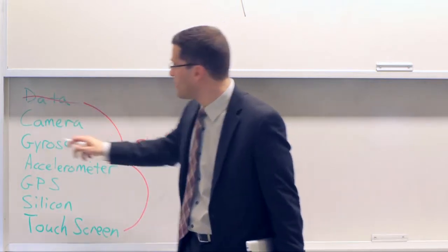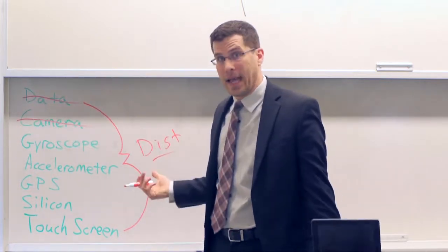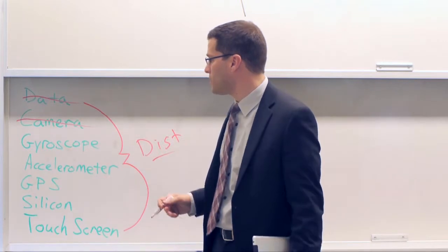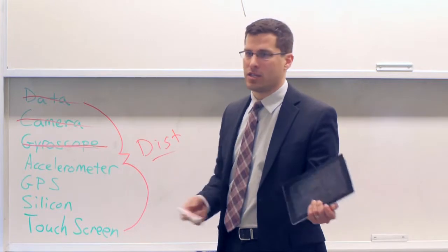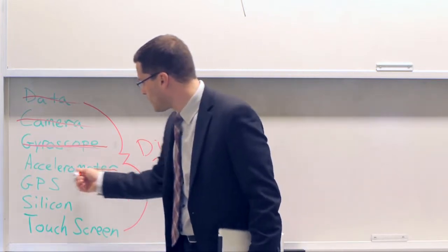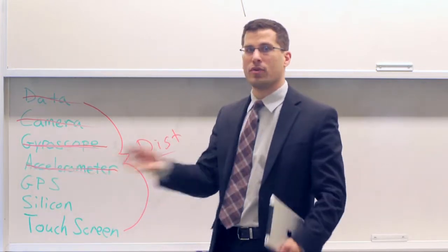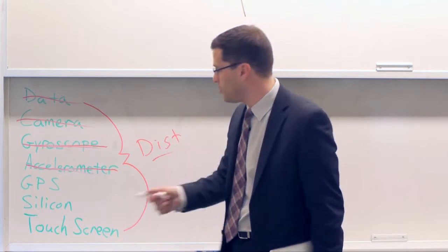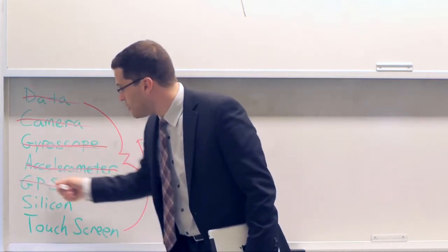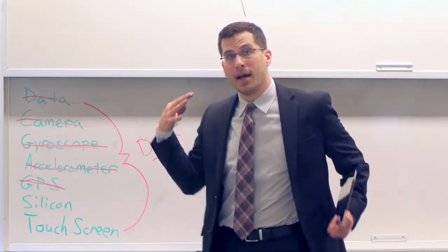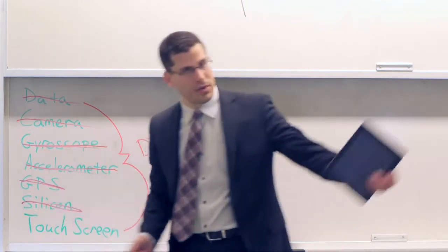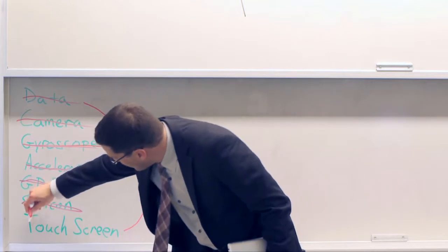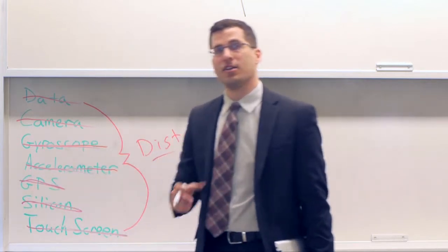We've had data for forever. Everybody in here has a camera probably, or everybody who's watching this video even may have a digital camera. Gyroscopes have been around for ages and you could buy a gyroscope if you really want to. Accelerometers, so what if you knew how to move in one direction or the other, knew how fast you were moving. These have been around for forever. GPS systems, you can go out and buy a GPS system to install in your car. Silicon has been in computers for decades now and touch screens are nothing new either.